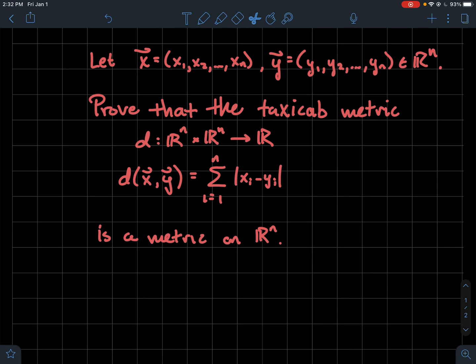In this video, we're going to show that the taxicab metric on R^n is indeed a metric. For some setup here, I'm going to use vector notation, x with an arrow over it. And what that stands for is a vector that has n components, where the components are x sub 1, x sub 2, up to x sub n.